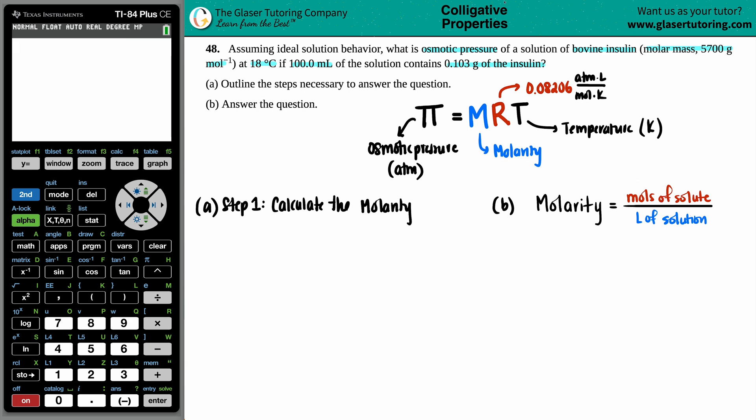I need moles. So I need to convert the 0.103 grams of the insulin into moles of insulin. Grams to moles, we can easily convert by just dividing by the molar mass. But I don't know what insulin is on the periodic table. That's why they gave us a molar mass. They told us that the insulin weighs 5,700 grams per mole. This is a crazy compound.